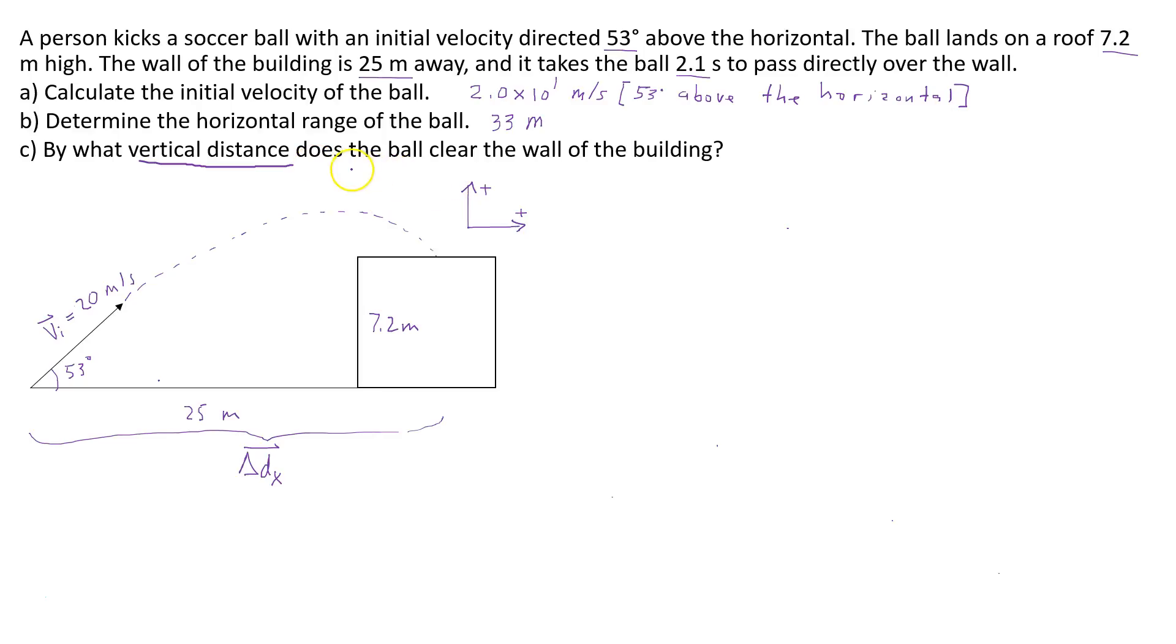I'm going to begin by writing the givens. I know that the time that it takes the ball to reach the wall is 2.1 seconds. I know the initial velocity, the initial vertical velocity of the ball is 20 times sine 53.